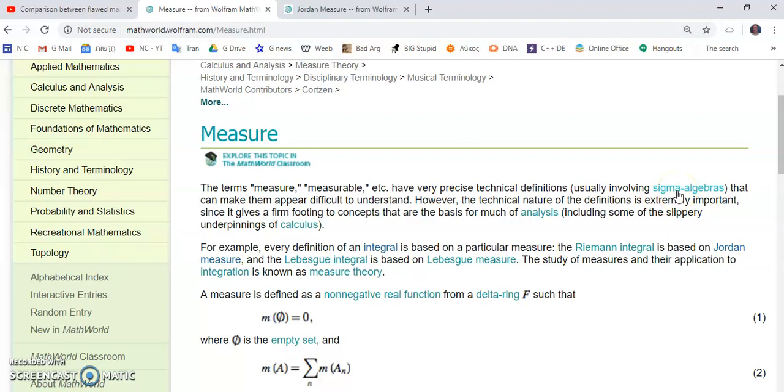By the way, a sigma algebra is just a type of algebra with a few important, two or three important properties about the sets and the functions that are used. And that can make them appear difficult to understand. Actually, they're long, convoluted, irrelevant.